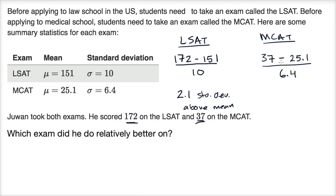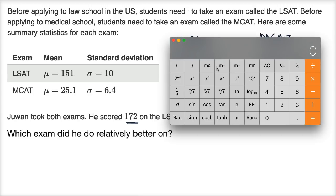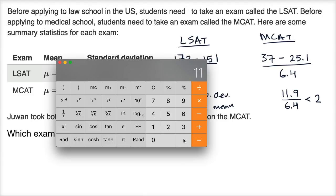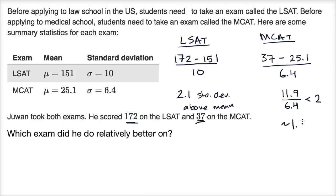So 37 minus 25.1 gives us 11.9. Then 11.9 divided by 6.4 — without even looking at this, this is going to be a little bit less than two. Let me get the calculator out: 11.9 divided by 6.4 gives approximately 1.86.